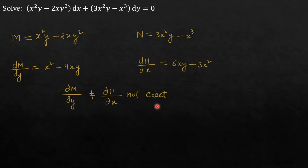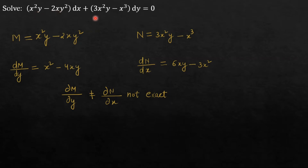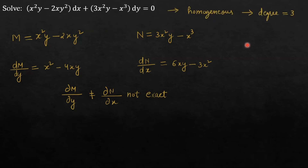Since the equation is not exact, we need to calculate a suitable integrating factor to make it exact. You can clearly see all the terms are of degree 3 — for example, x² · y¹ gives total power 3. Since all terms have the same degree of 3, this is a homogeneous differential equation of degree 3, so we apply Rule 1.